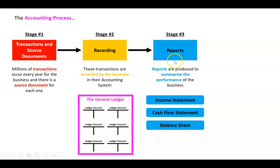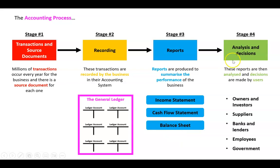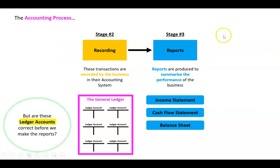Stage three: we'll make some reports — income statement, cash flow statement, balance sheet. Stage four: we'll analyze those and make decisions. But how would we make those reports? We need to be able to balance a ledger to know it's correct at the end of the period, but there's a step in between.